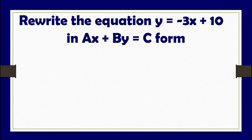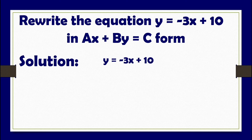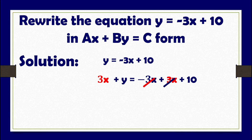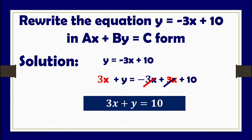Third example: rewrite y equals negative 3x plus 10 in ax plus by equals c form. We add both sides by 3x to eliminate negative 3x from the right side and transpose it to the left. The simplified equation is 3x plus y equals 10, which is the general form of the equation of our line.